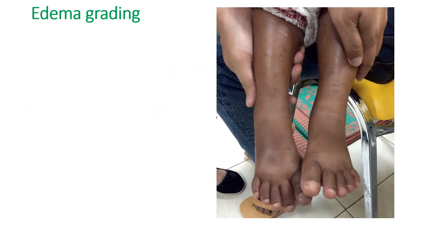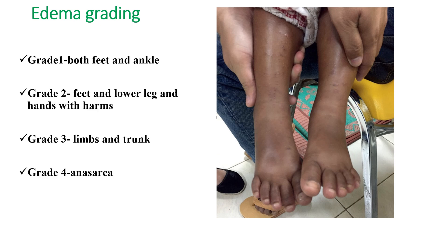We should always grade edema to decide inpatient or outpatient treatment and to monitor response to treatment. Grade 1 is edema found around the feet and ankles. Grade 2 is edema around feet and lower legs and also hands with arms. Grade 3 is edema involving the thighs and trunk. Grade 4 is anasarca.